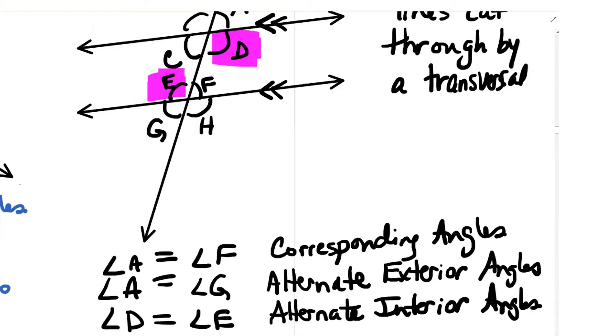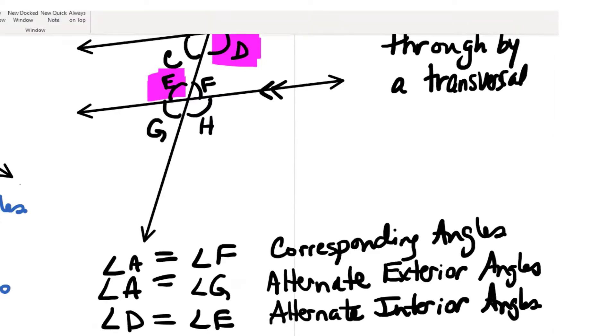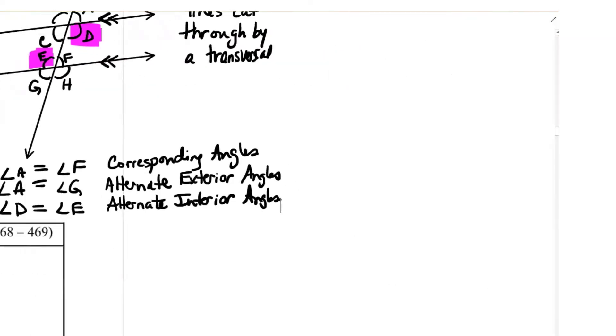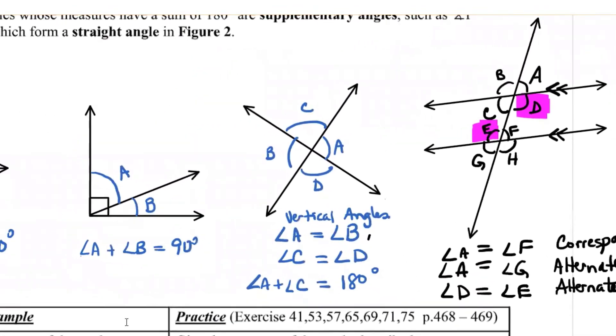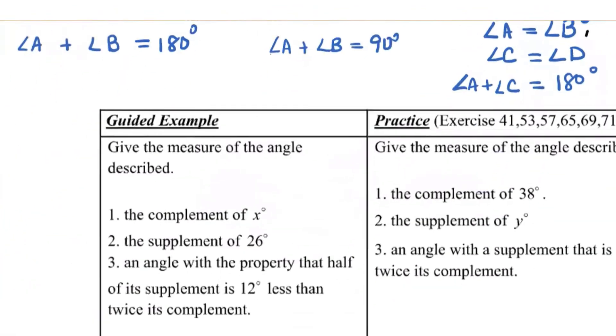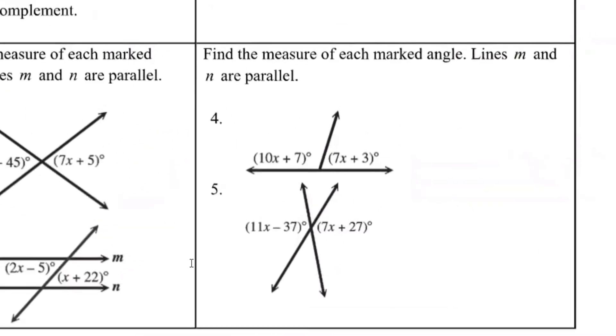Okay. So that's my little review of all the different relationships that we can get when you have intersecting lines like these lines and rays. And now I'm going to go down to these problems here.